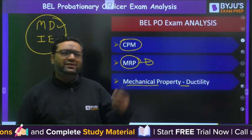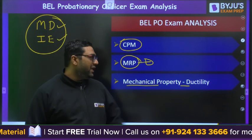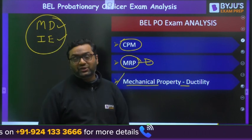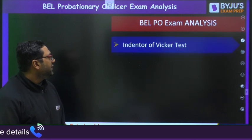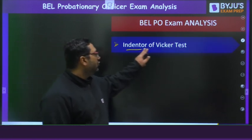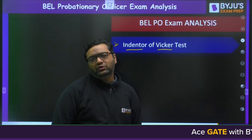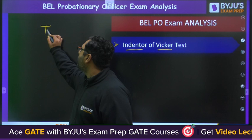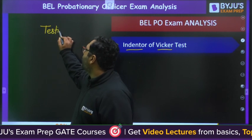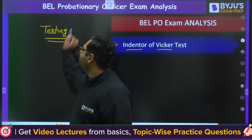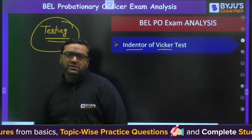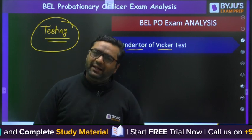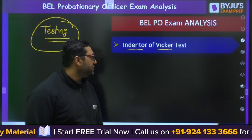The next topic is mechanical property — ductility. The question was: the phenomenon by which a rod can be converted into wire — what is the property? Is it stiffness, elasticity, or ductility? This is from properties, the stress-strain diagram. Next is the indenter of Vickers test. If you see the GATE syllabus, hardness and toughness testing are there. This clearly tells us that BEL people have strictly followed the GATE syllabus to make the questions.